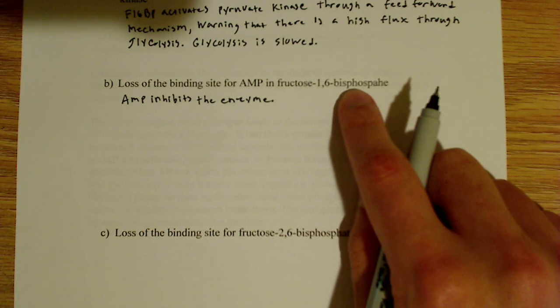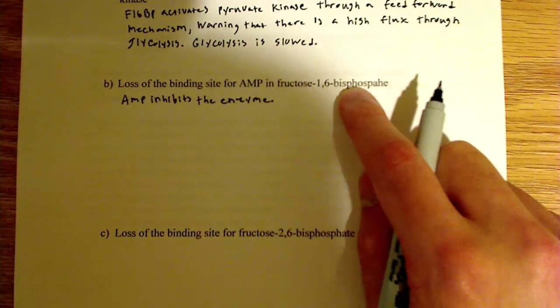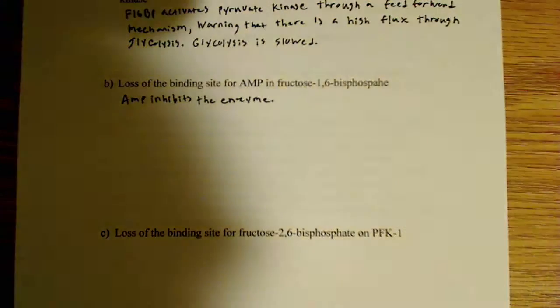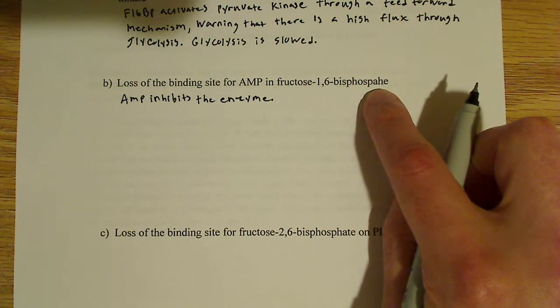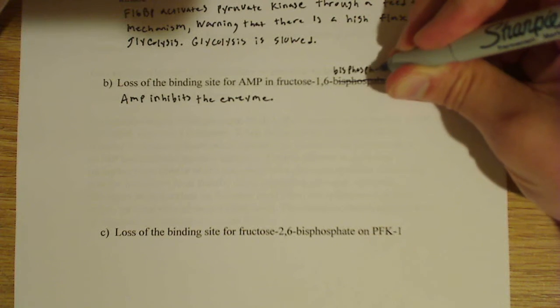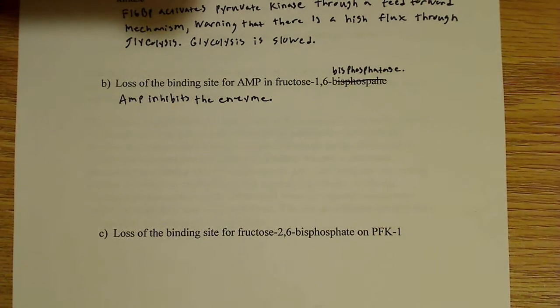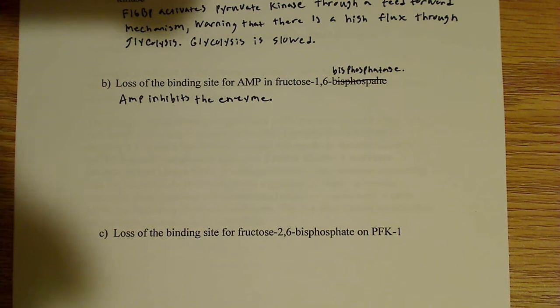Actually, this should say fructose-1,6-bisphosphatase — bisphosphatase is involved not in glycolysis but in gluconeogenesis. This is the enzyme that converts fructose-1,6-bisphosphate to fructose-6-phosphate in gluconeogenesis. AMP is an inhibitor of this enzyme, because in order for gluconeogenesis to occur, the cell needs to have plenty of energy. So AMP being a signal that the cell is low on energy is not good for gluconeogenesis.